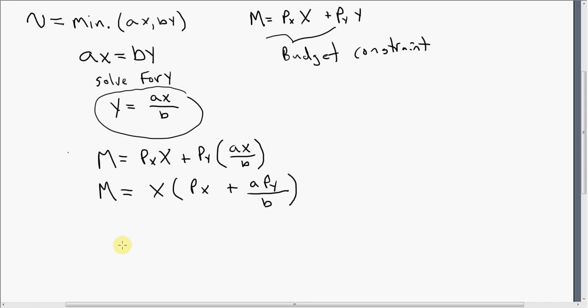The next step is just divide through by what's in parentheses and you have your demand function for good x. So the demand for good x here is going to be a function of income, function of the price of good x, and the price of good y.